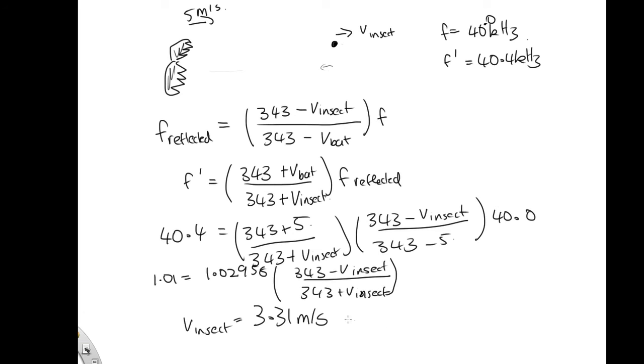And so that is the velocity of this insect. Now part B asked us, is the bat going to catch the insect? Well, the bat's going at 5 meters per second towards the insect, who's running away from it, and he is gaining on the insect. So yes, he will eventually catch the insect.